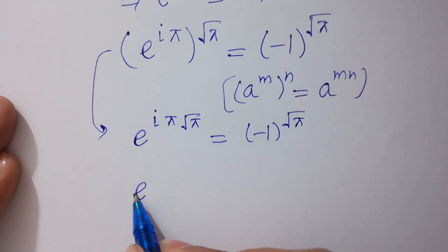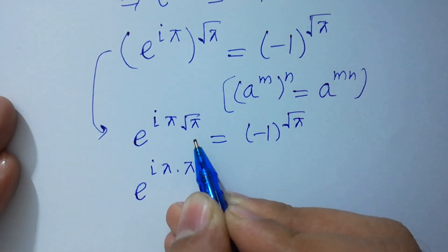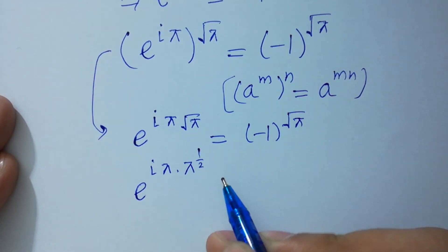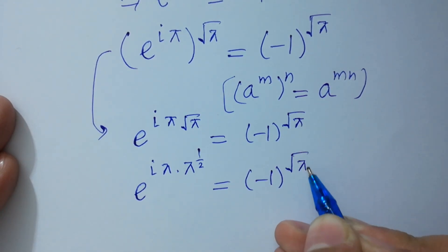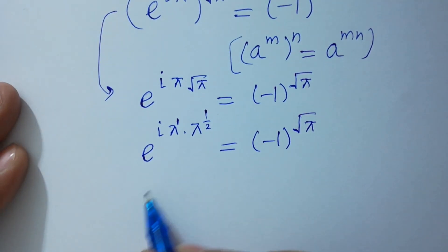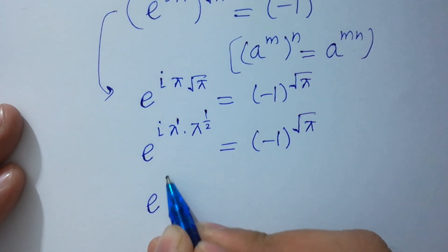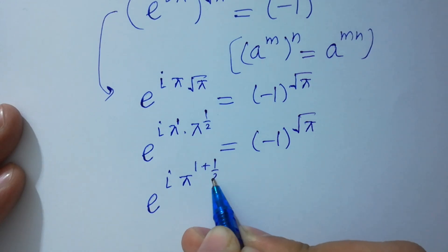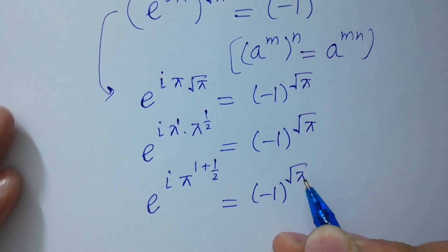Now, e to the power i·pi·square root of pi — where square root of pi is pi to the power 1/2 — since the base is the same, we add the powers: e to the power i·pi times (1 plus 1/2) equals minus 1 to the power square root of pi.